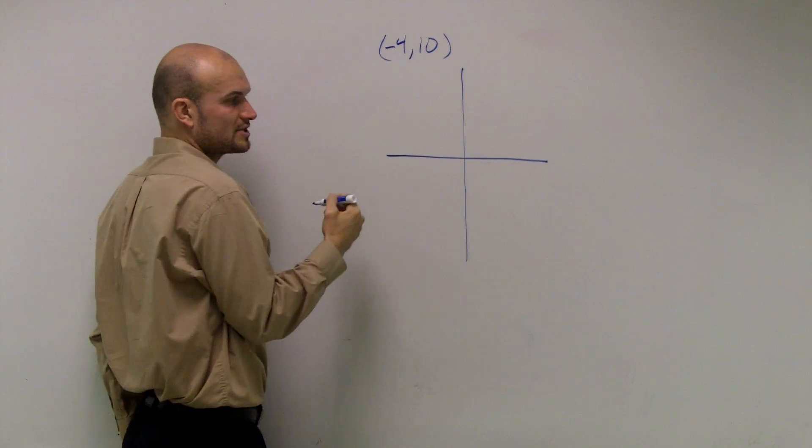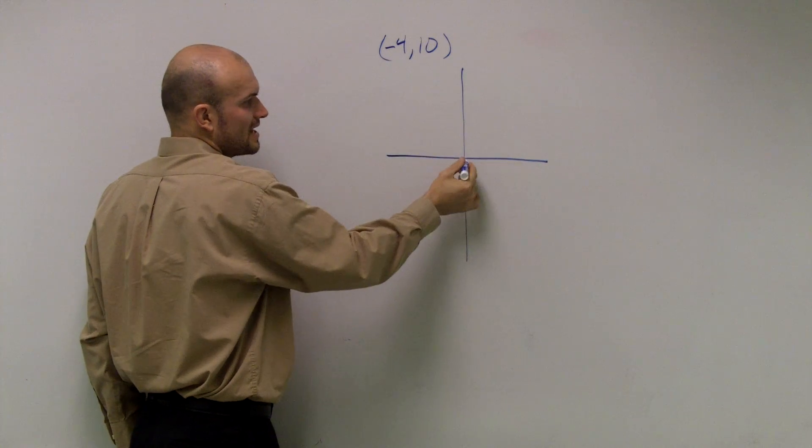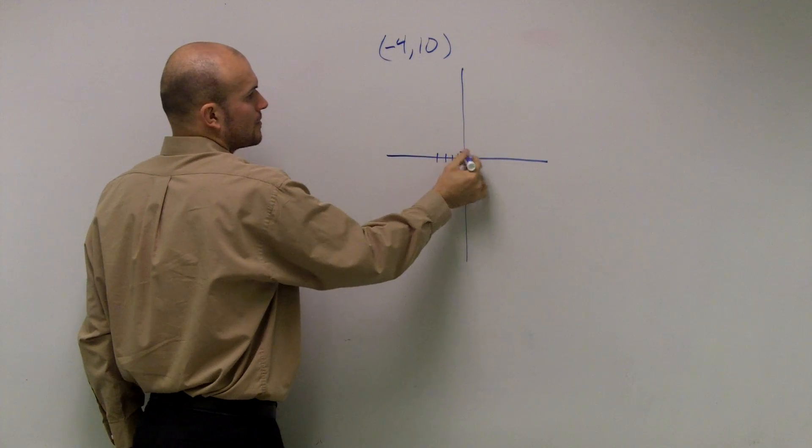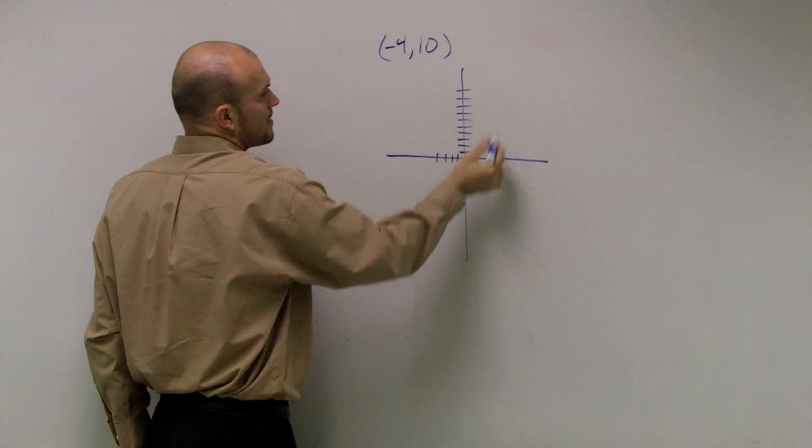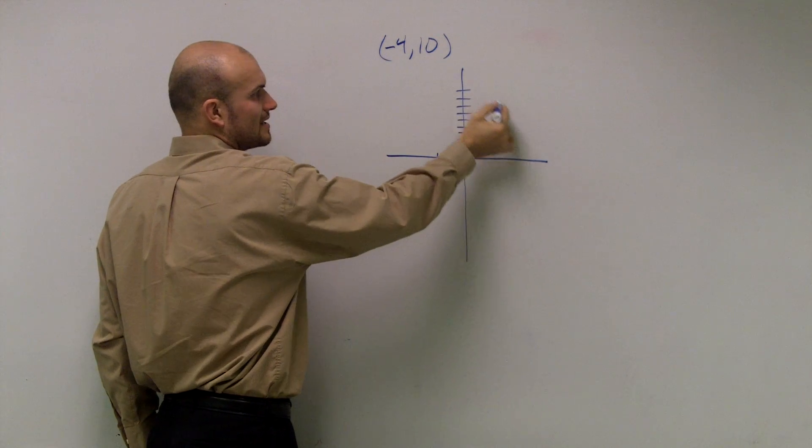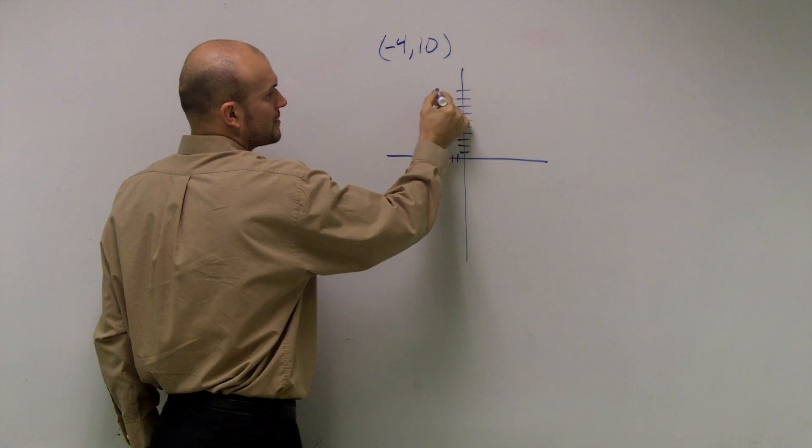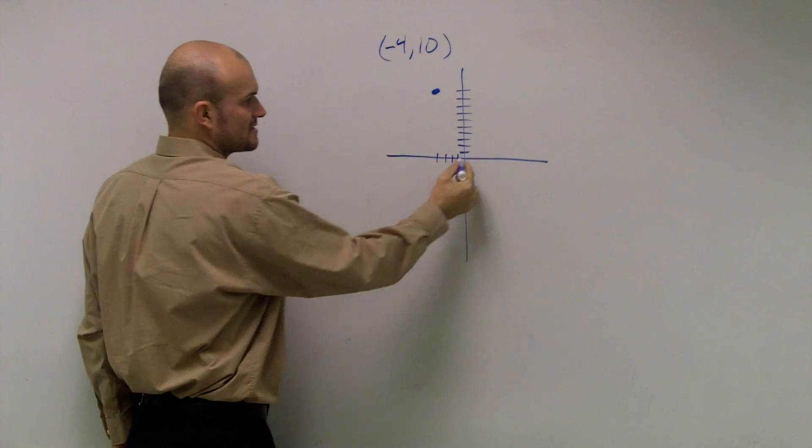First of all, I need to figure out where this point is. Well, negative 4, 10, I can say here's my initial side, and I'll just go all the way here. That's where negative 4, 10 is.